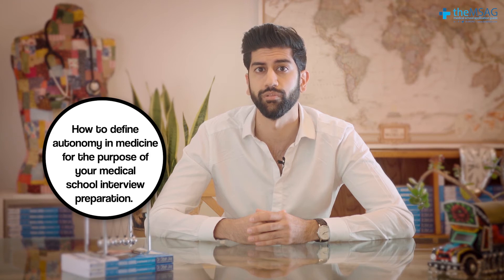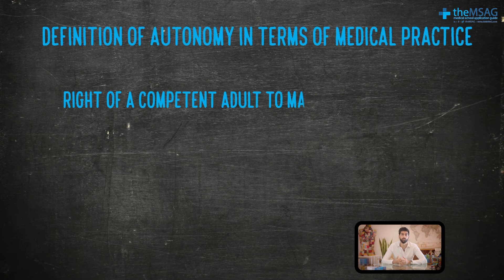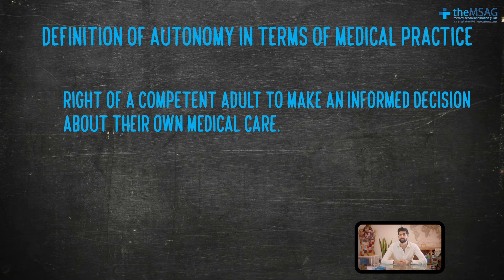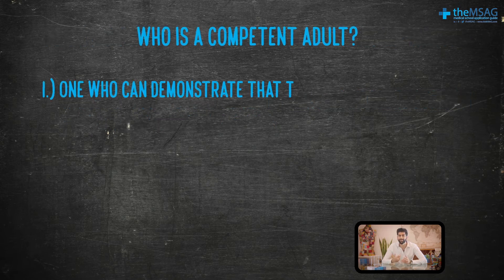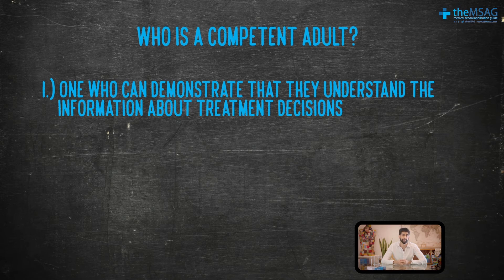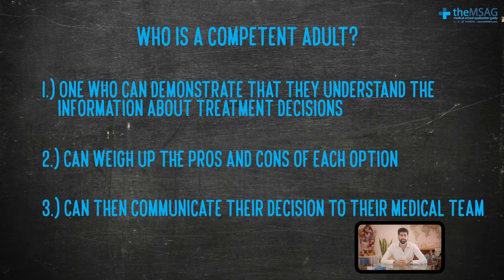Now that you understand how recent the concept of autonomy is, let's define it for your medical school interview preparation. In medical practice, autonomy is usually expressed as the right of a competent adult to make an informed decision about their own medical care. A competent adult is one who can demonstrate that they understand the information about treatment decisions, are able to weigh up the pros and cons of each option, and can communicate their decision to their medical team. This is known as capacity.